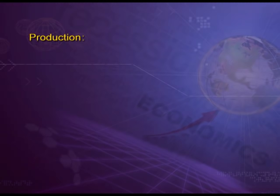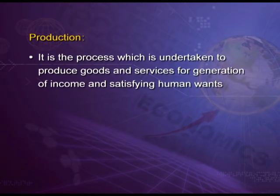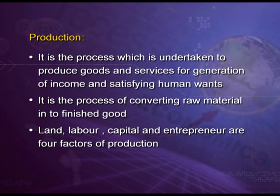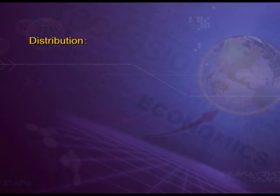The next activity is production. It is the process undertaken to produce goods and services for generation of income and satisfying human wants. It is the process of converting raw materials into finished goods. Land, labour, capital, and entrepreneur are the four factors of production which are combined and are helpful in producing various goods and commodities in our society.